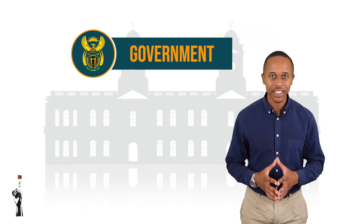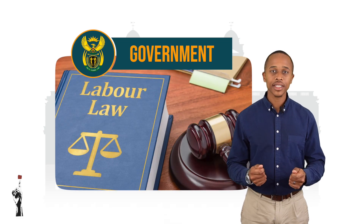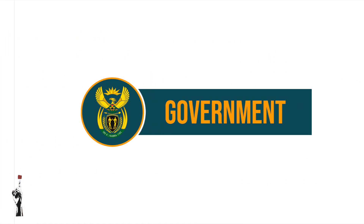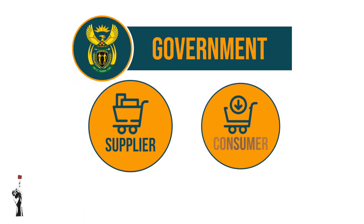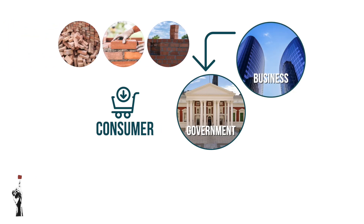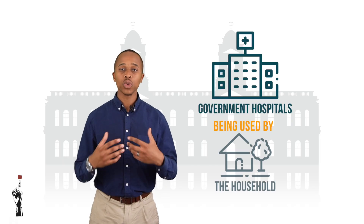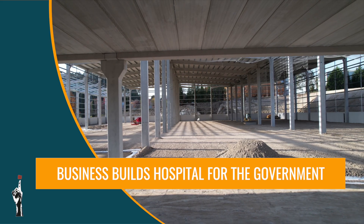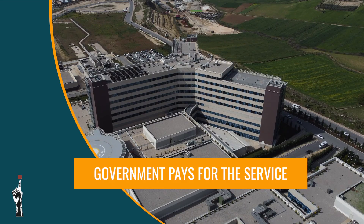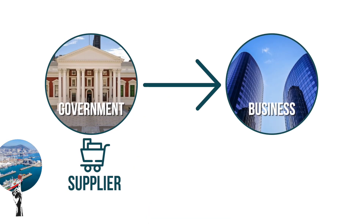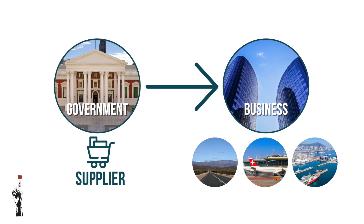It is also the government's responsibility to provide legislation to protect employees from unfair practices, which has a direct impact on businesses. The government plays a role as both a supplier and consumer within the business sector. As a consumer, it purchases businesses' products or uses their services — for example, businesses build government hospitals and get compensated for that. As a supplier, the government creates infrastructure such as roads, airports, and ports so that businesses may use them for exporting goods.